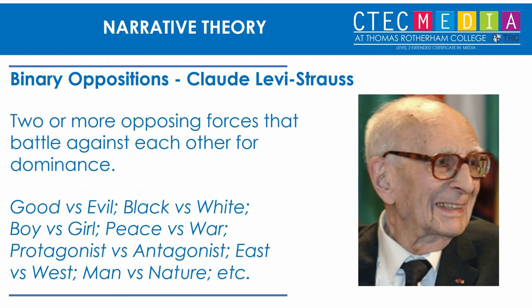Next we're moving on to binary opposites, or binary oppositions. Binary oppositions is the idea that each narrative has two or more opposing forces that battle against each other. It doesn't need to be action-related — it could be good versus evil, but also things like boy versus girl in a romance film, commitment versus staying single, east versus west, or man versus nature. It could be a theme rather than two characters physically battling each other — any two things that oppose each other and battle for dominance in the narrative.